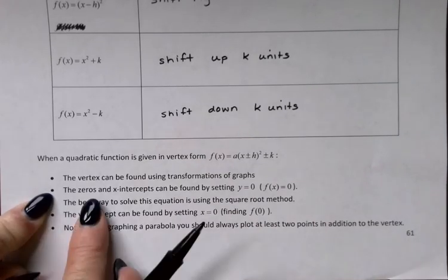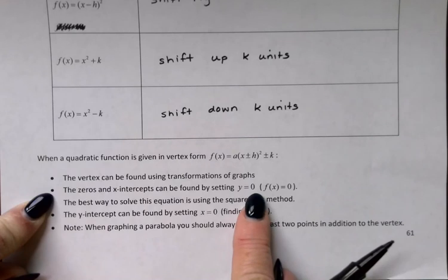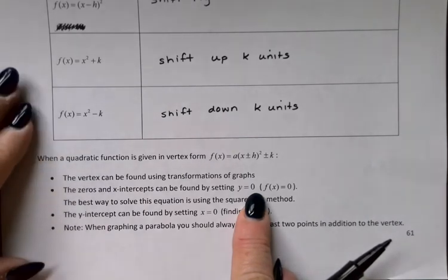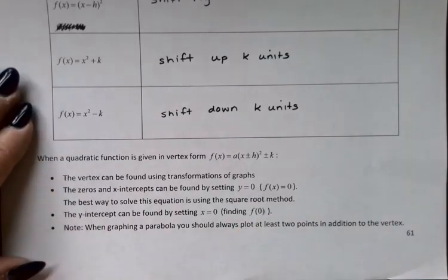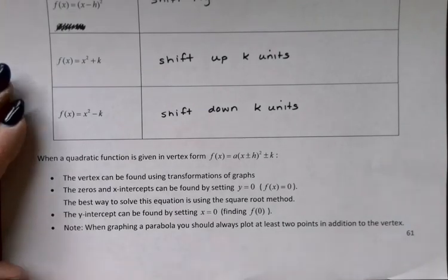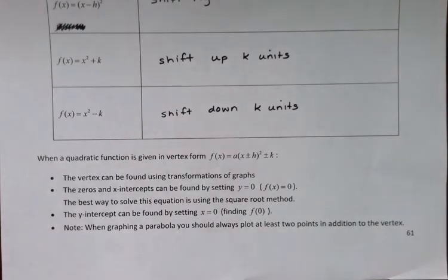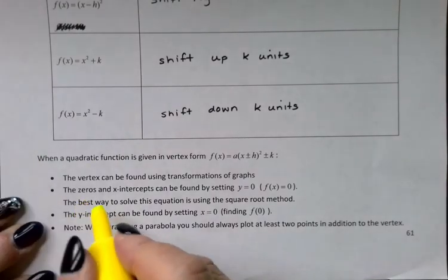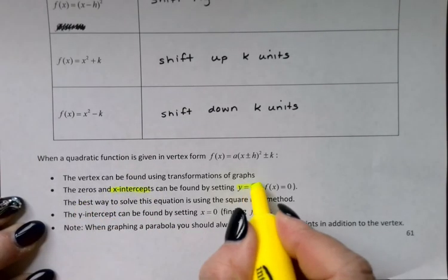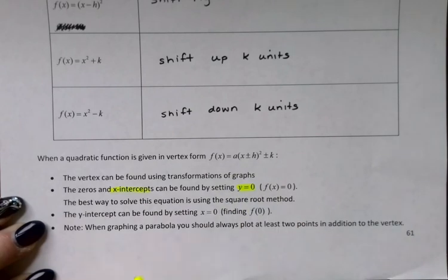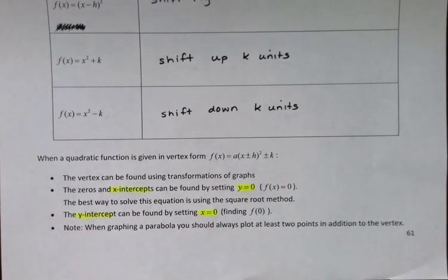Additionally, if we would like to find zeros or x-intercepts, we can do that simply by setting y equal to zero. Typically, the square root method is going to be the easiest way for us to solve those equations. And then the y-intercept we get by setting x equal to zero. Notice, x-intercepts are always y equal to zero. Y-intercepts are x equal to zero. It's always the opposite variable that you set equal to zero.